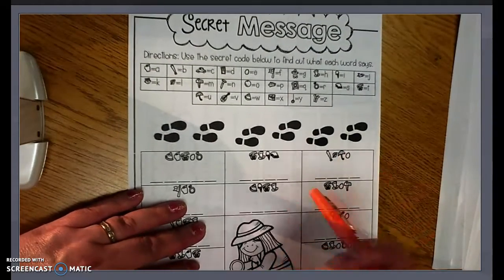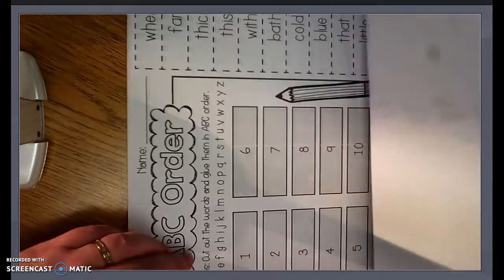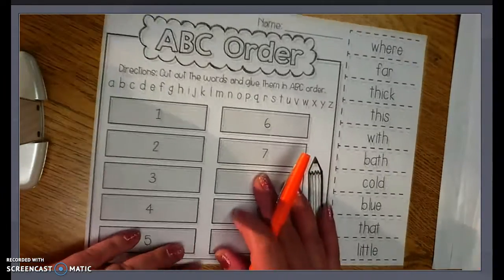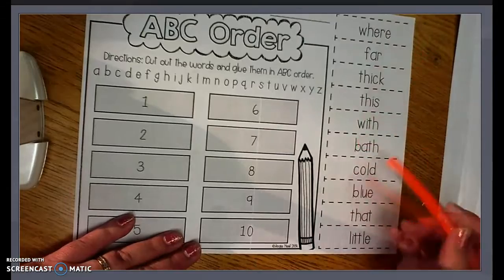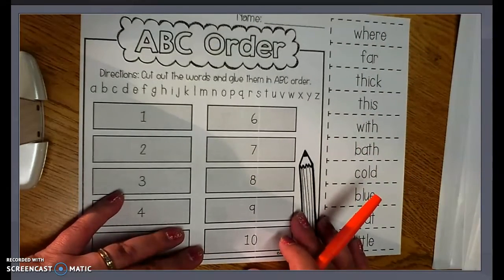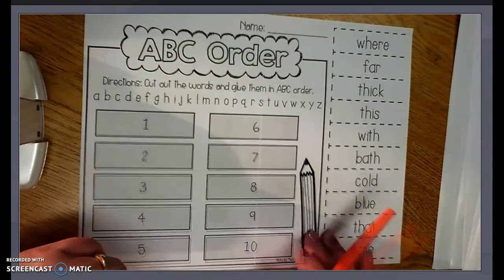Then you're going to do a secret message. And then you're going to do your ABC order. So you're going to take all these words and put them in ABC order. And that is what your work packet is for Wednesday.